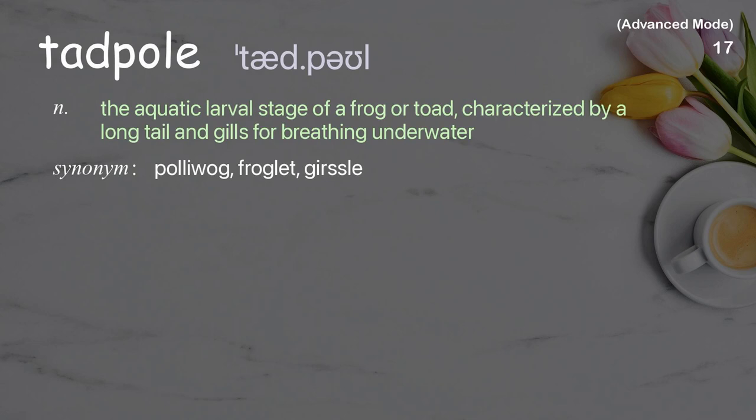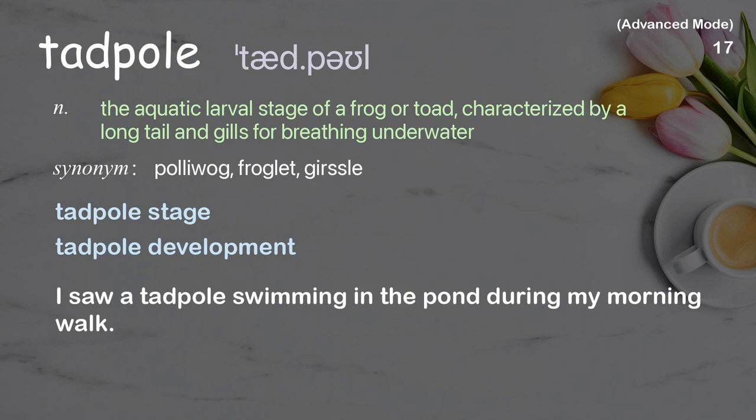Tadpole: The aquatic larval stage of a frog or toad, characterized by a long tail and gills for breathing underwater. Examples: Tadpole stage, Tadpole development. I saw a tadpole swimming in the pond during my morning walk.